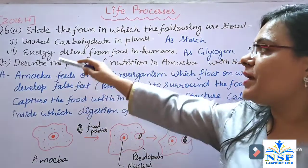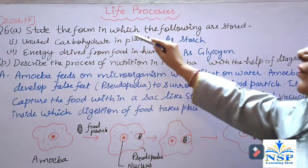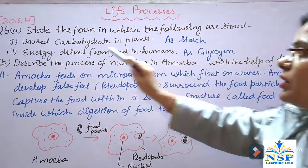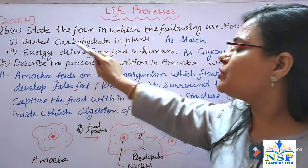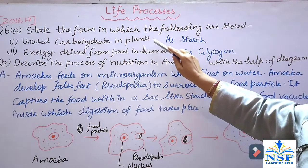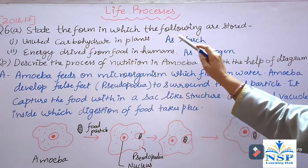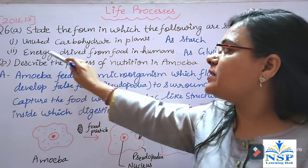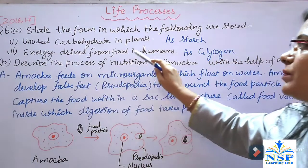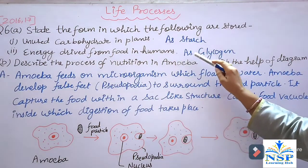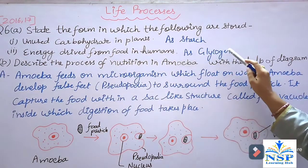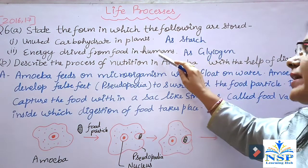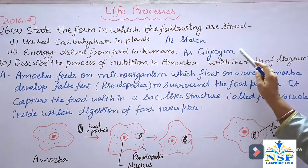Question number 6: State the form in which the following are stored. Unused carbohydrates in plants are stored in the form of starch. The energy derived from food in humans is stored in the form of glycogen. When humans require energy, glycogen changes into glucose.